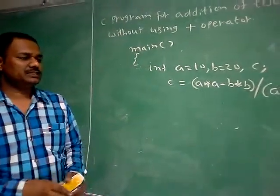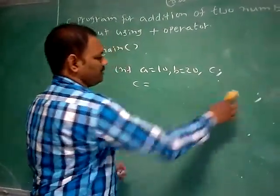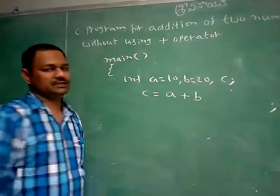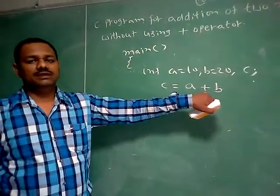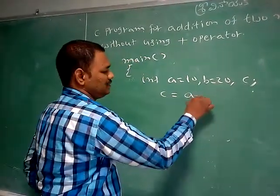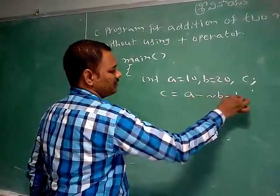And the third solution is: I can write A plus B. Plus B can be replaced with minus of minus B.